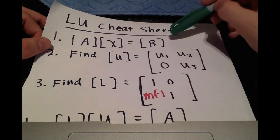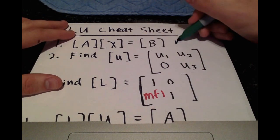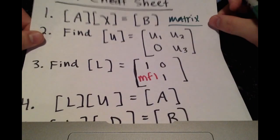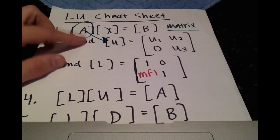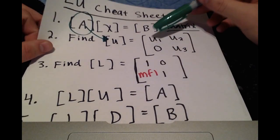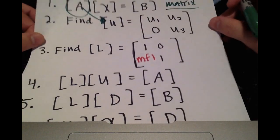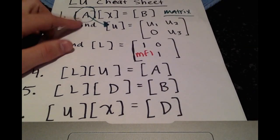So A x equals B, that's the first step. You want to convert your system of equations to matrix form. And then you're going to want to find U through the manipulation of A. And it'll always look like this. You'll have numbers along the diagonal and above, and zeros below.